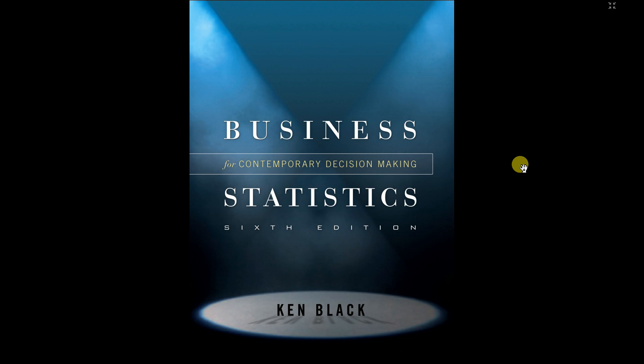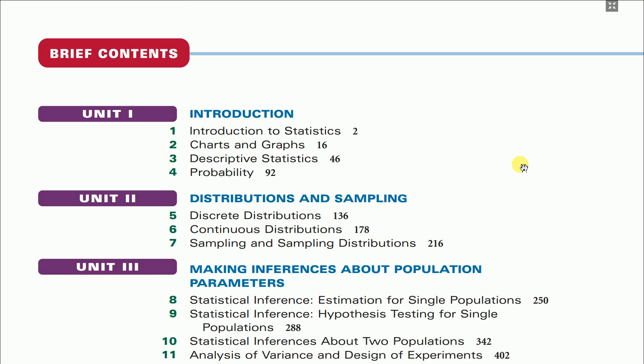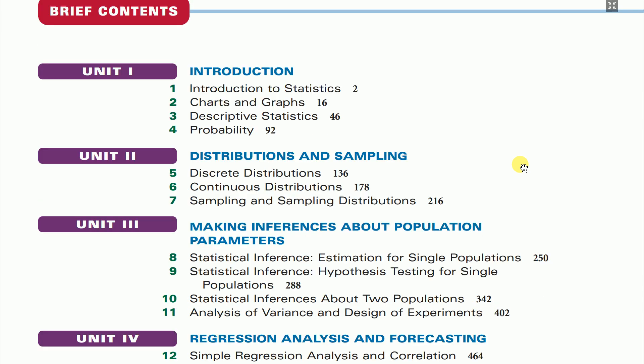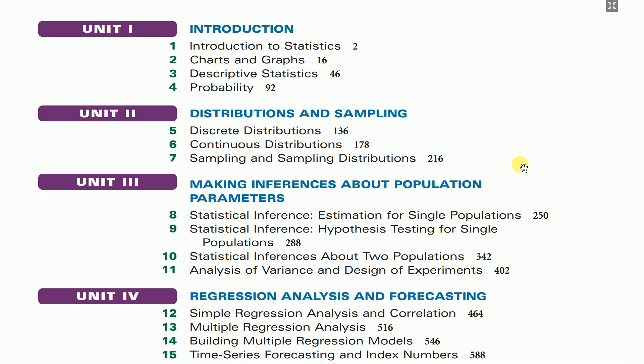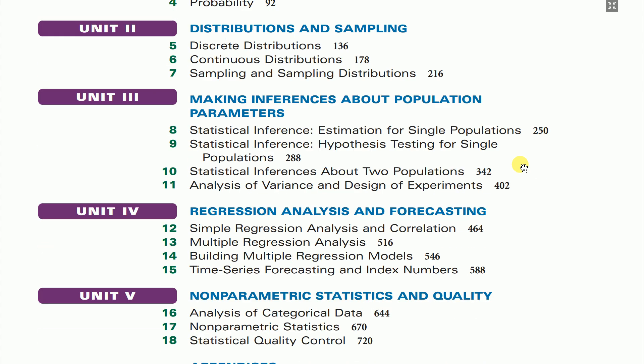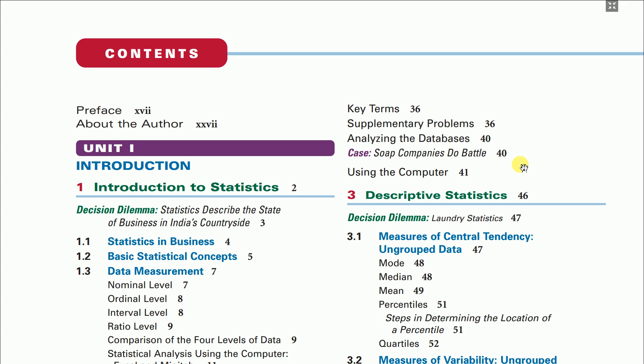Ken Black is the book I actually used to kickstart my journey in data science and machine learning. The book is divided into multiple units: the first unit covers introductory statistics, then distributions and sampling, followed by inferential statistics in the third unit, and also regression analysis and forecasting.